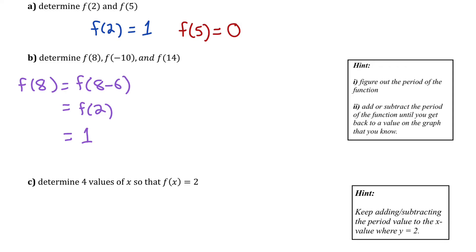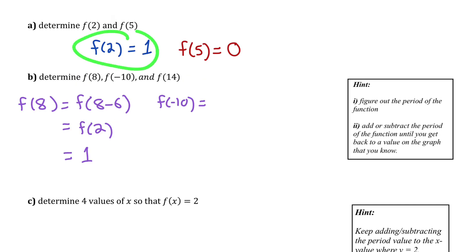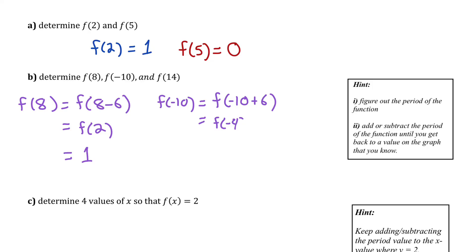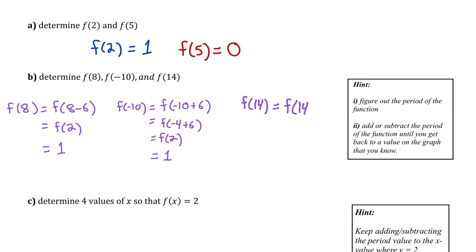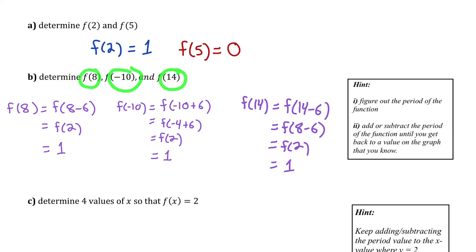For f(−10): add the period repeatedly to get back to a known value. f(−10) = f(−10 + 6) = f(−4), and f(−4) = f(−4 + 6) = f(2) = 1. So f(−10) = 1. For f(14): f(14) = f(14 − 6) = f(8) = f(8 − 6) = f(2) = 1. All these values equal 1 because they are all multiples of 6 away from x = 2, and the period is 6.